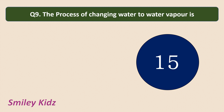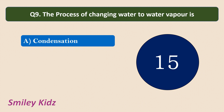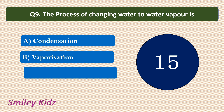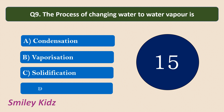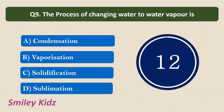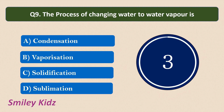Question number 9. Your options are Condensation, Vaporization, Solidification, or Sublimation. Your time starts now. Your time is up and the correct answer is Vaporization. Vaporization is the process of changing water to water vapor — that is, liquid to gas is vaporization.